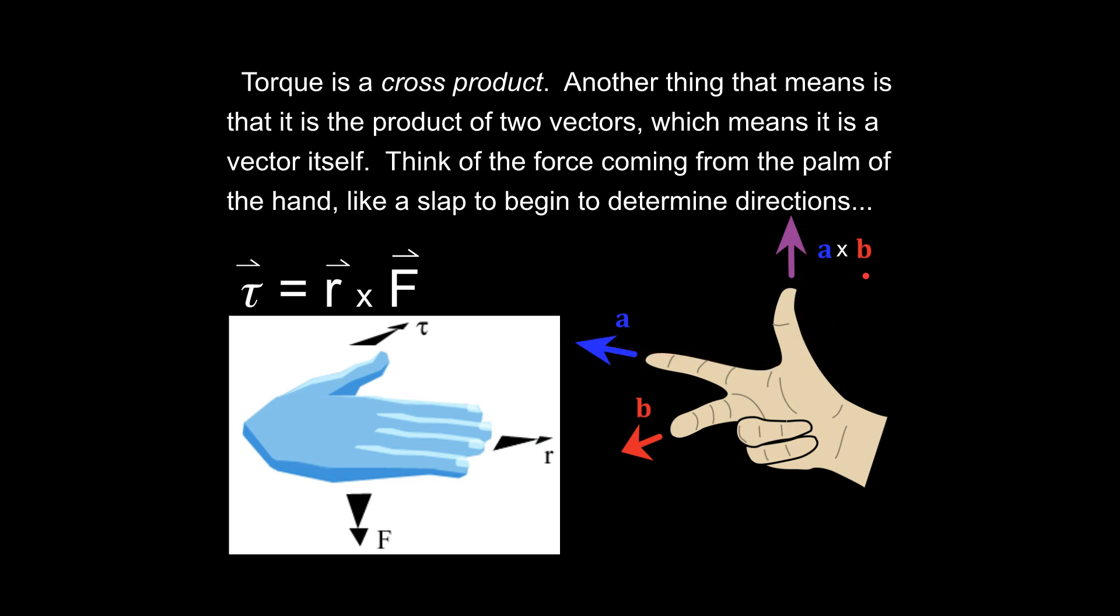And the cross between R and F would be our torque value. And that would be what you would get out here in the direction of the thumb. And the reason why that's important is because we are dealing with vectors in three dimensions. So you have to have a system to be able to think through this. And this is a very handy way to be able to do that.